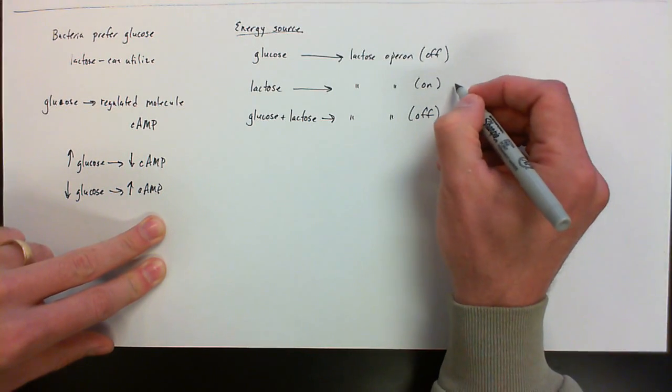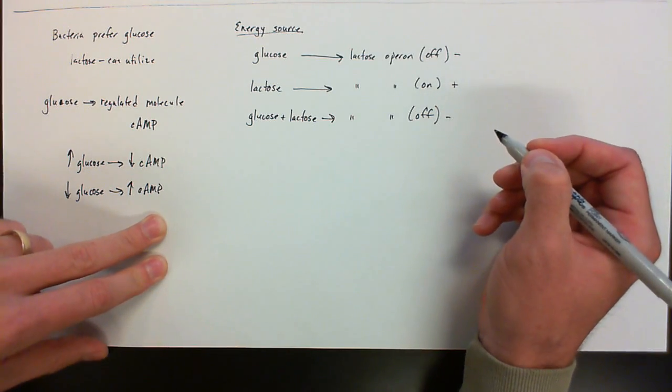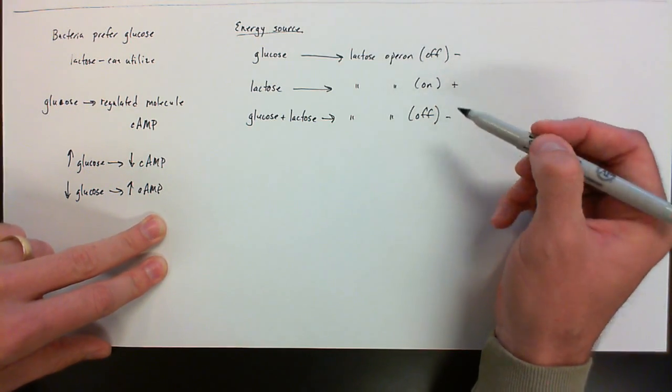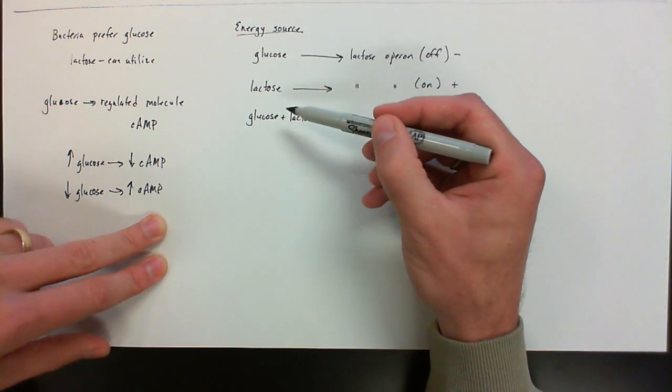So a lot of times in science, you'll see pluses for on and minuses for off. And now what we'll do later here is talk about how the structure of the operon allows this mechanism to actually occur.